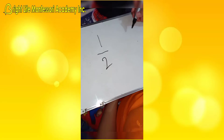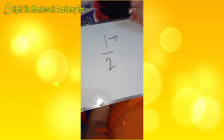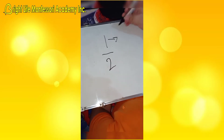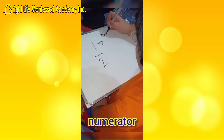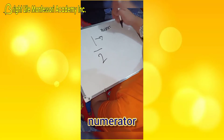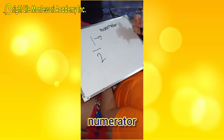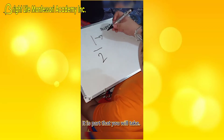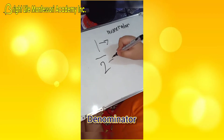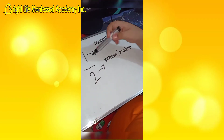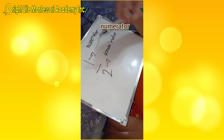How will you read this? This is one half. You read this as one half. It tells you how many parts you will take, and you call this the numerator. This one is the numerator.